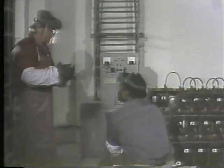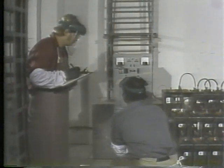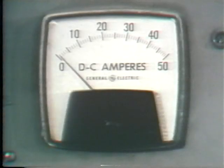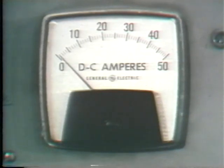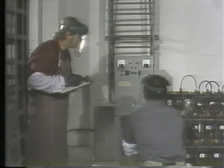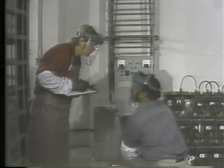For this initial inspection, one worker keeps the records while the other takes readings. The first thing they have to check is the float voltage — if it's set too low, the battery won't be getting a full charge; if it's set too high, the battery may be damaged by overcharging. The ammeter on the charger gives an indication of the battery's present condition. It should reflect the normal station load plus a small trickle current through the battery.